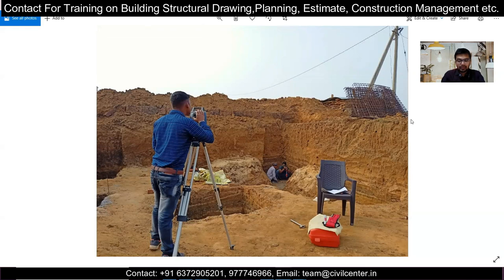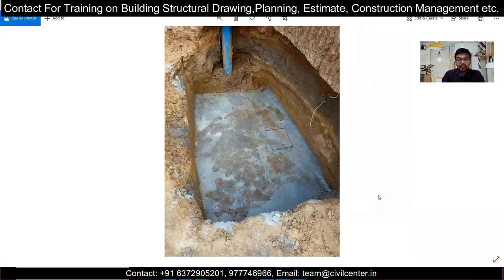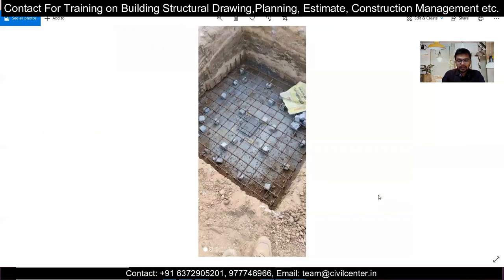Before placing the reinforcement, you can do another round of total station marking to mark the positions of the columns. They can be marked in yellow — as you can see, these yellow spots indicate the positions of the columns. This column position marking is done before placing the footing reinforcement. A small extra PCC layer at the side can also be made to denote the column cover — for example, minus 40 mm.